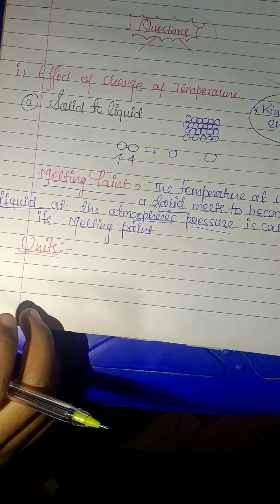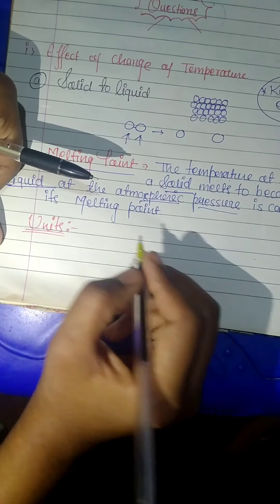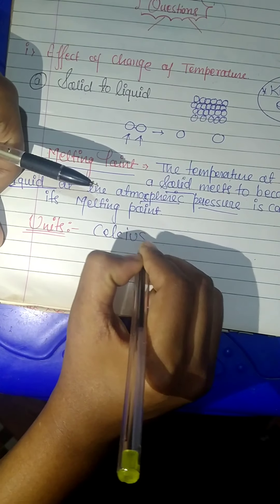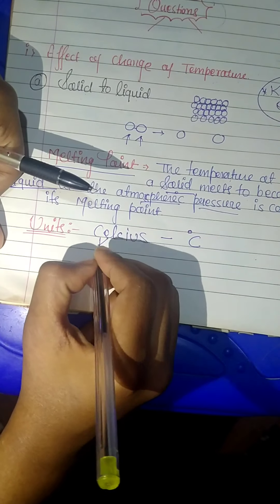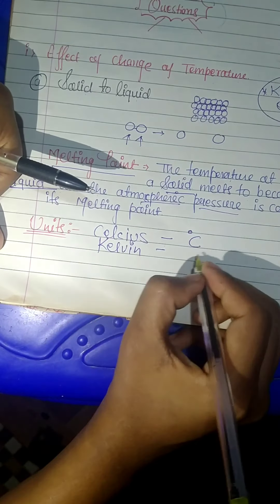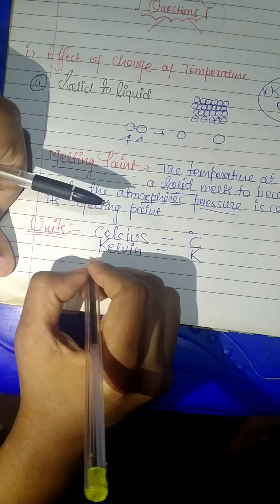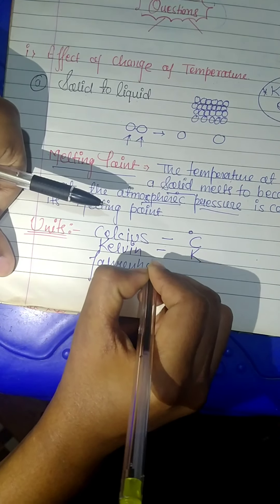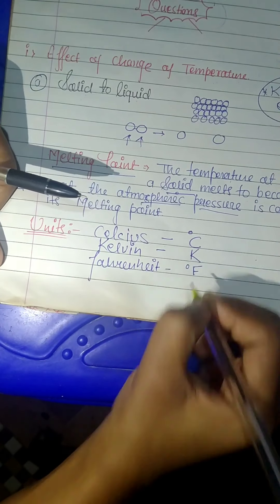We can denote melting point using three units. The first is Celsius, shown as degree Celsius (°C). The second is Kelvin — remember that Kelvin does not use 'degree'; you simply write K. The third is Fahrenheit, written as degree Fahrenheit (°F).